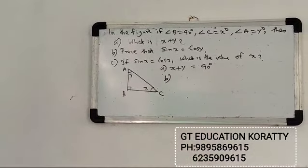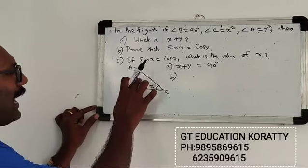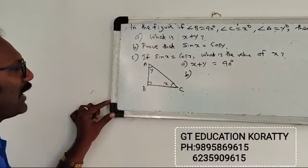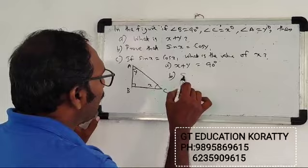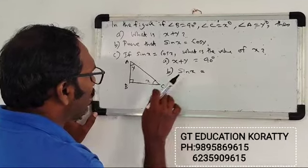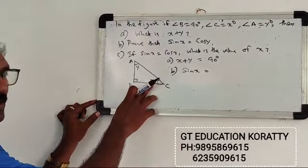Next question: prove that sin x equals cos y. For this triangle, we will find sin x. Sin x equals the opposite side divided by the hypotenuse.